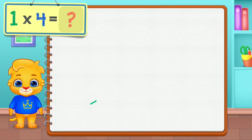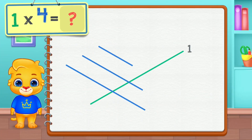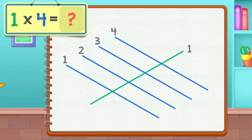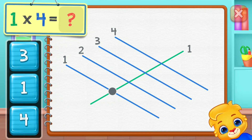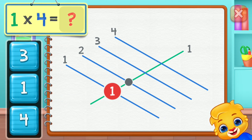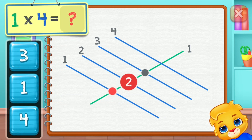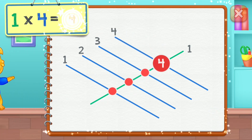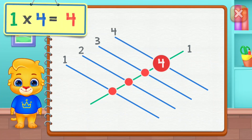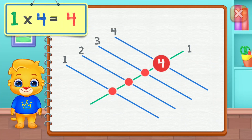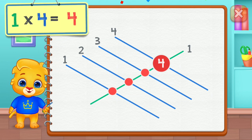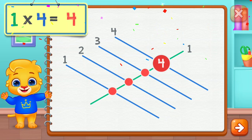One times four equals... One, two, three, four. One times four equals four.